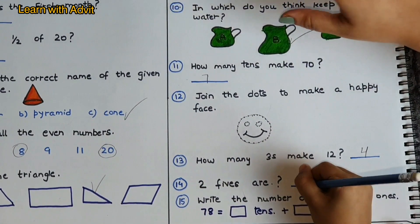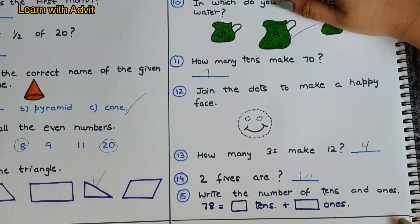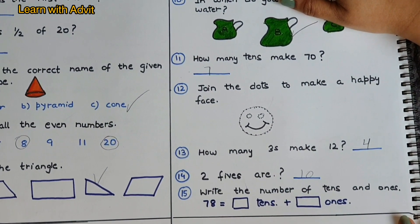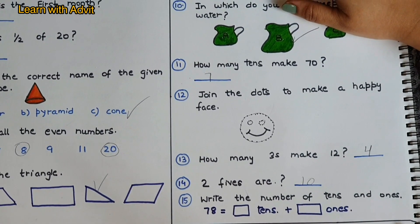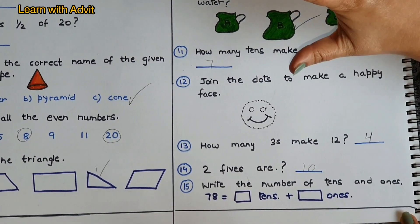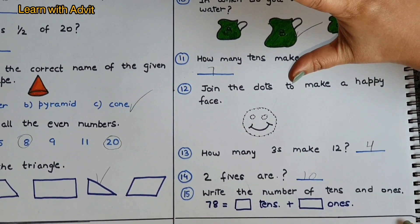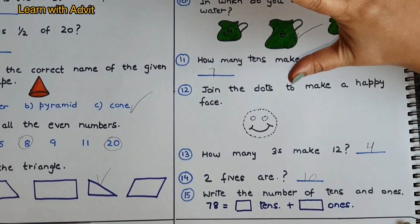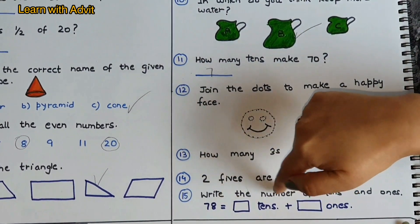Three fives are... five, then five, ten, then again five... three fives is fifteen, very good.